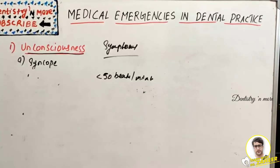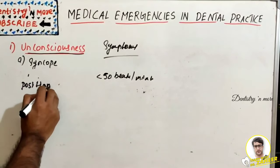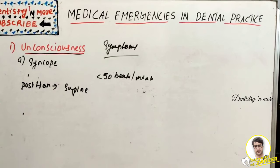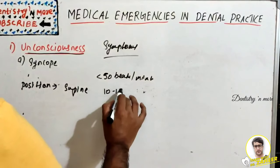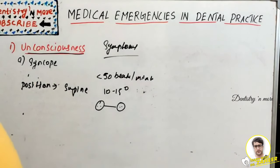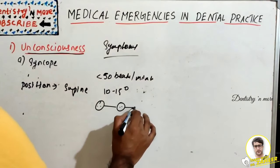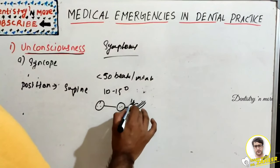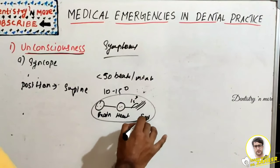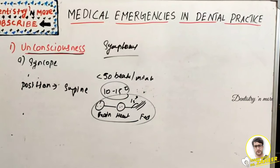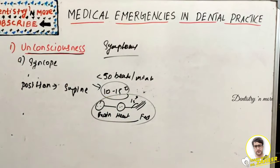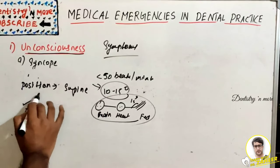To manage syncope, the first step is positioning: place the patient in a supine position where the brain and heart are at the same level, with feet elevated slightly at 10 to 15 degrees. This is important - do not forget the 10 to 15 degree elevation of the feet. Then proceed with ABC: checking the airway, checking breathing, and checking circulation.